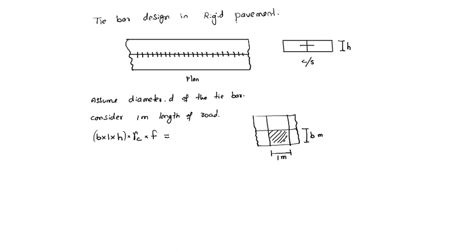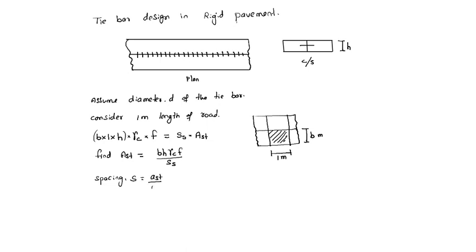This maximum frictional force is resisted by the area of steel multiplied by the stress in steel. The area of steel is AST. We can find AST from this equation. Then spacing S equals (AST / Capital AST) into 1000 millimeters.